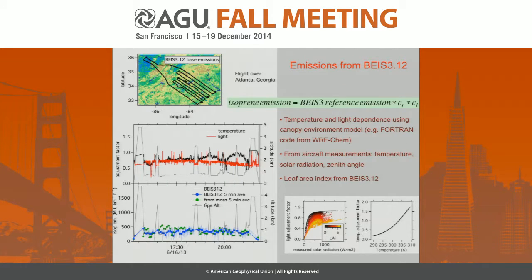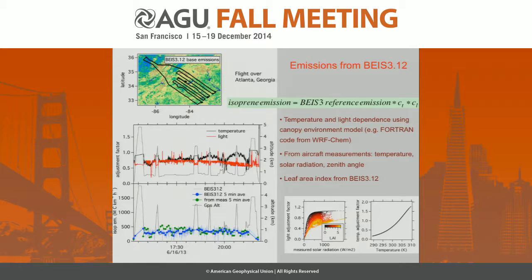The next step is the emissions calculated from BEIS 3.12. The BEIS base emissions were extracted along the flight track, and the light and temperature dependence is calculated using the exact same canopy environment model used in the WRF-CAM model — we basically took the FORTRAN code and adapted it to use aircraft data as input. The result is shown as a time series along the flight track; we multiply this all out and end up with emissions shown for both one-second data and five-minute averages, with the mixed boundary layer method overlaid.